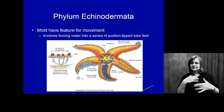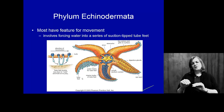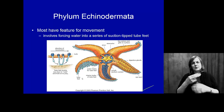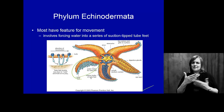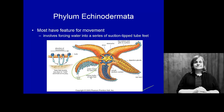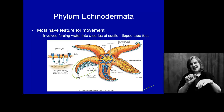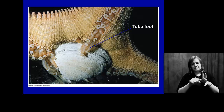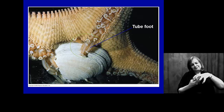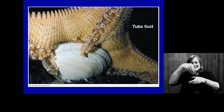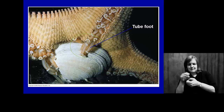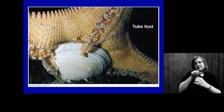Starfish are one of the more mobile echinoderms, but they still don't move very fast. They move through a hydrostatic system where they use their tube feet and suction to move around. The mouth is actually on the bottom and the anus is on the top. When they eat, they wrap their tube feet around and grab onto a clam. The mouth is on the underside, and the stomach is actually thrown up inside the clam to digest it inside its own shell, then the stomach rolls back up inside the starfish.